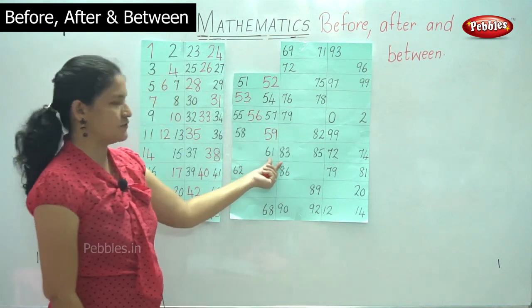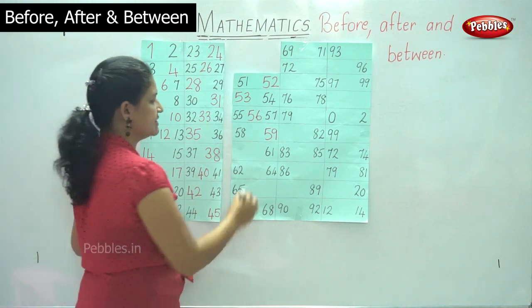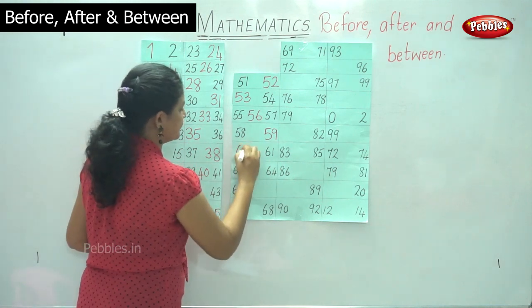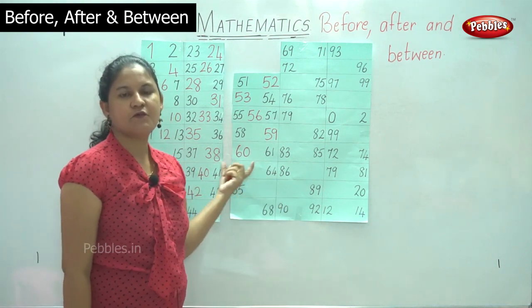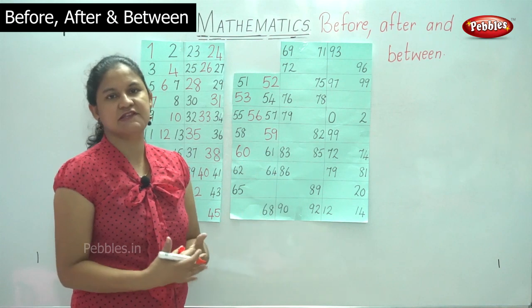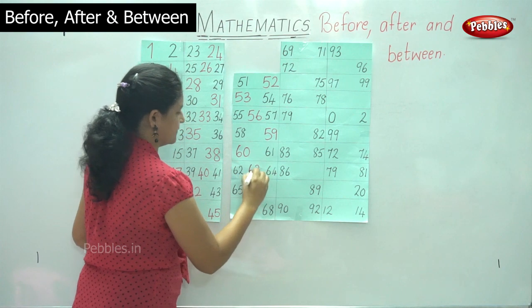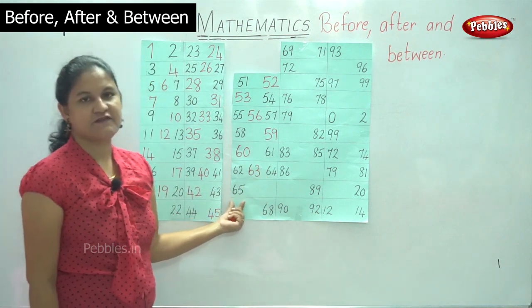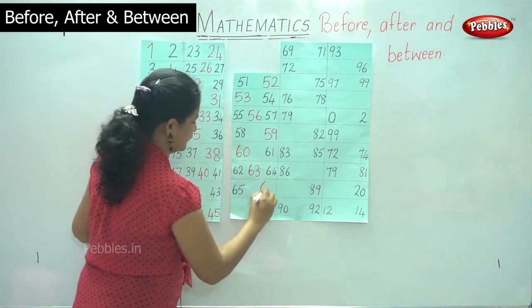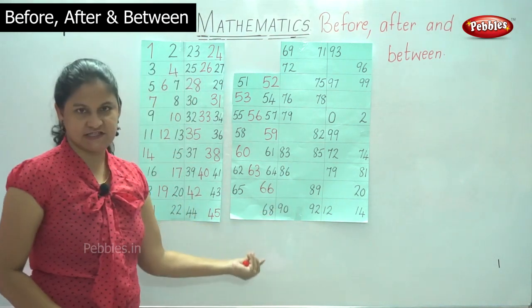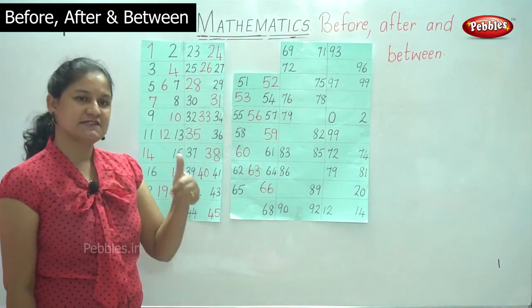We have number sixty-one, and we want to find out what number comes before number sixty-one — it is number sixty. Then we have numbers sixty-two and sixty-four, and what number comes between these two numbers is number sixty-three. We have number sixty-five, and what comes after sixty-five is number sixty-six. Then we have number sixty-eight, and what comes before sixty-eight is number sixty-seven.